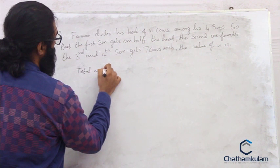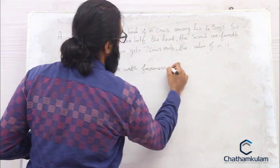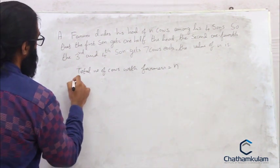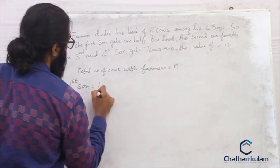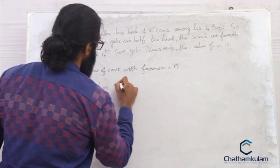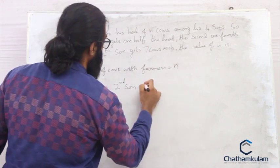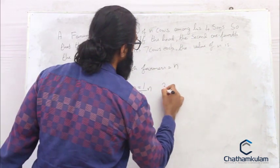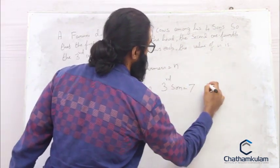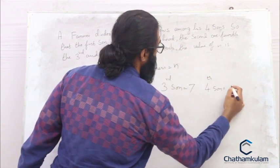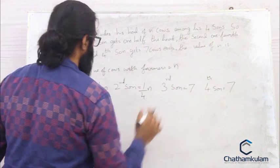The total number of cows with the farmer is n. The first son gets half the total, that is n/2. The second son gets one fourth of the total, that is n/4 cows. To the third son he gives seven cows, and also to the fourth son he gives seven cows. The sum of all these would be equal to n.